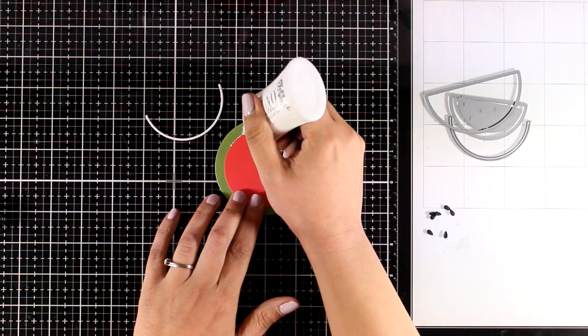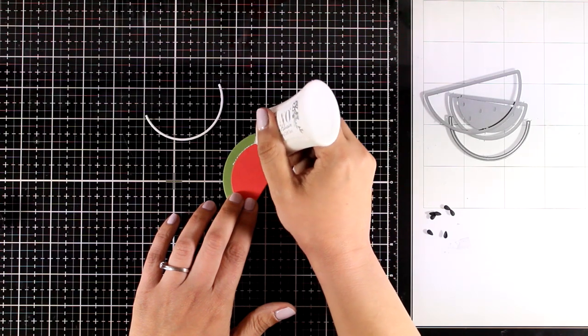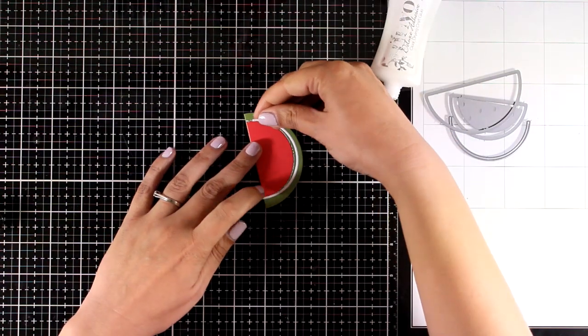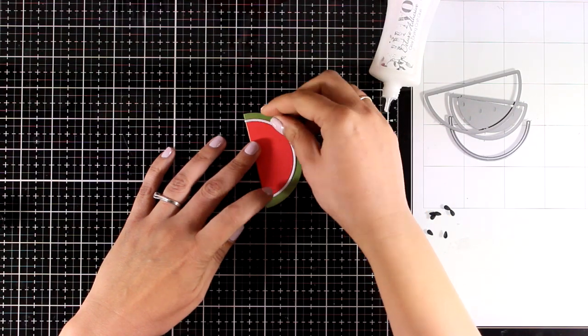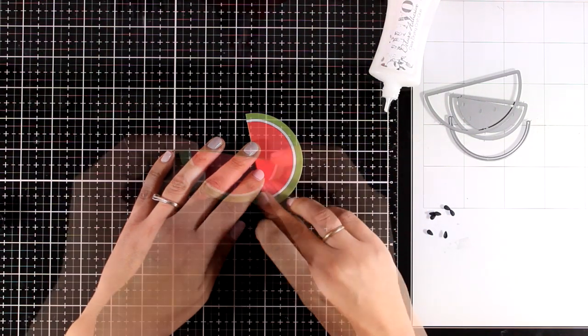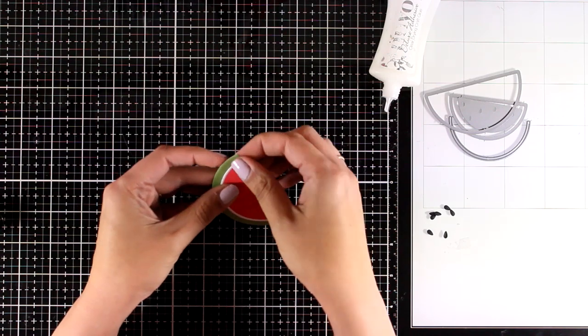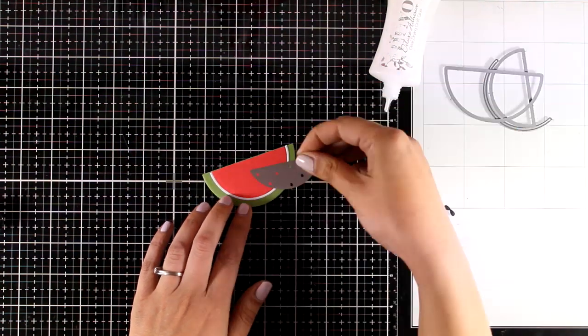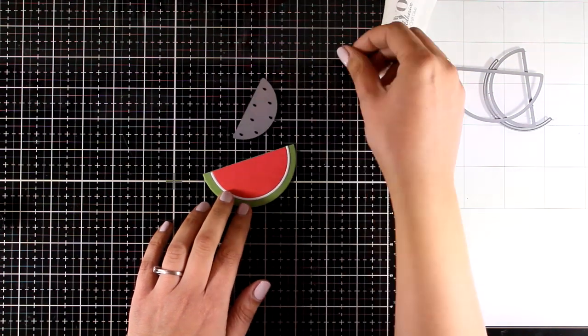Putting the watermelon together is super simple. As you can see, all you need are these three pieces: the green, the white, and the red. There's one more die that gives you the seeds.